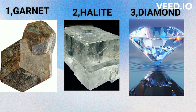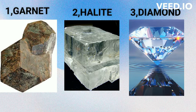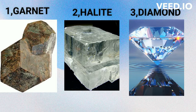Most garnets are isotropic, although some varieties may exhibit weak anomalous birefringence. Minerals belonging to the isometric crystal system, such as diamond, spinel, and halite (rock salt), are typically isotropic. Glass is an amorphous material that lacks a regular crystalline structure and therefore exhibits isotropic behavior.